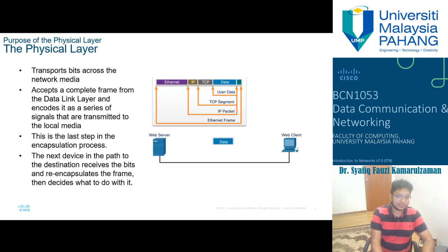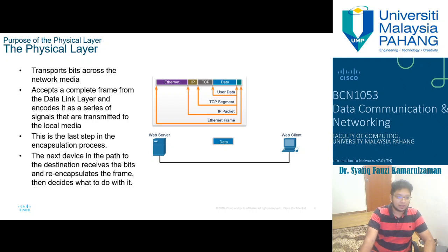The purpose of the physical layer is to transport bits across the network media — to accept a complete frame from the data link layer and encode it as a series of signals transmitted to the local media. This is the last step in the encapsulation process. In the TCP/IP protocol, we convert data into an Ethernet frame. From the data inside the transport layer, a TCP segment is inserted.